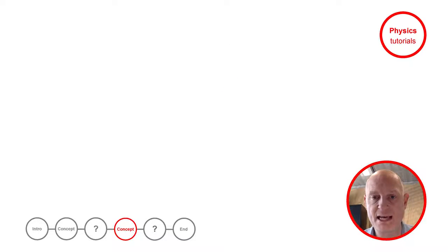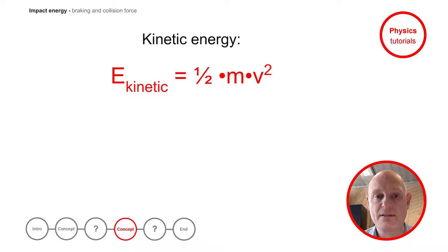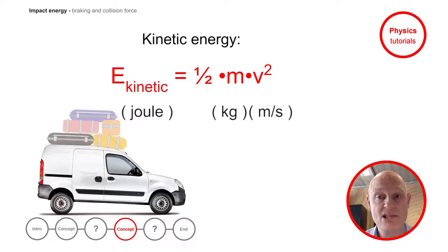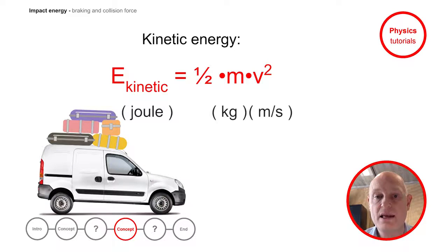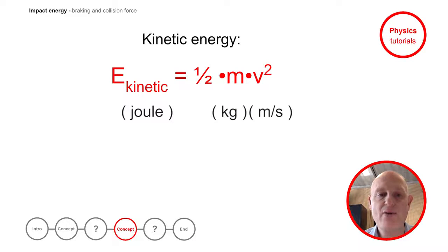Let us take a look at the kinetic energy. This energy is related to the mass and velocity of the moving object. The kinetic energy is in fact half times mass times velocity squared. This means that a moving car with more mass has more kinetic energy, and if the car has a higher speed, then there is also more kinetic energy. More accurately, the amount of kinetic energy is directly proportional with mass, and directly proportional with the squared velocity.